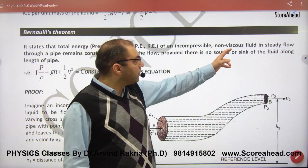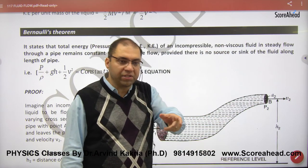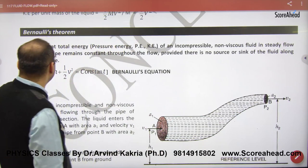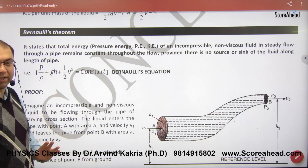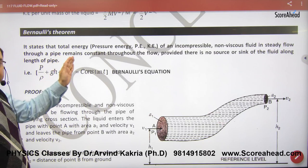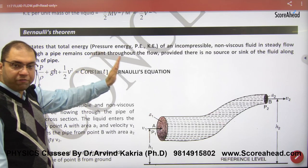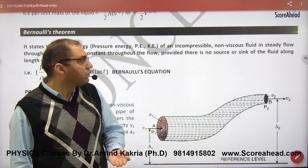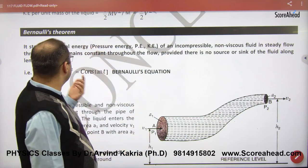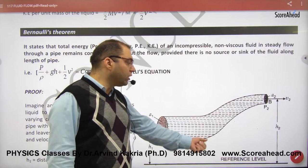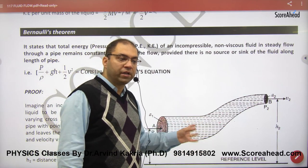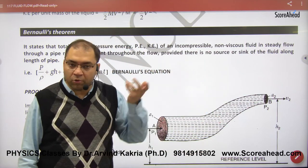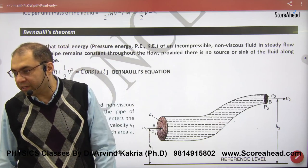It needs to be a steady flow, not turbulent. Through a pipe remains constant throughout the flow, provided there is no source or sink of the fluid along the length of the fluid. If you don't have a hole here, the water is going to flow. If the water will reach, energy conservation, how will it flow?